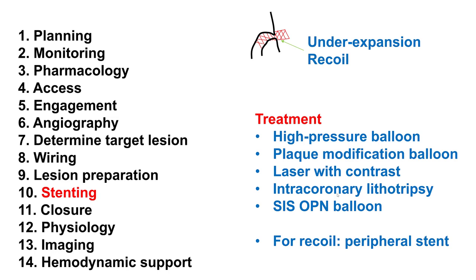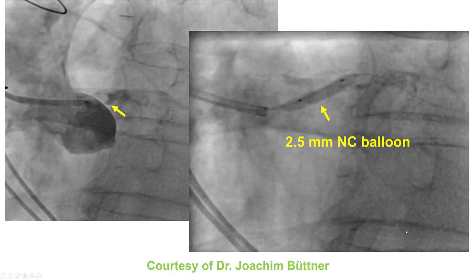If the stent is underexpanded or if there is recoil, the treatment is to use high-pressure balloons, special balloons, laser, lithotripsy, or very high-pressure balloons. Specifically for recoil — if the stent expands but then collapses — sometimes using a peripheral stent with high radial force may be needed.